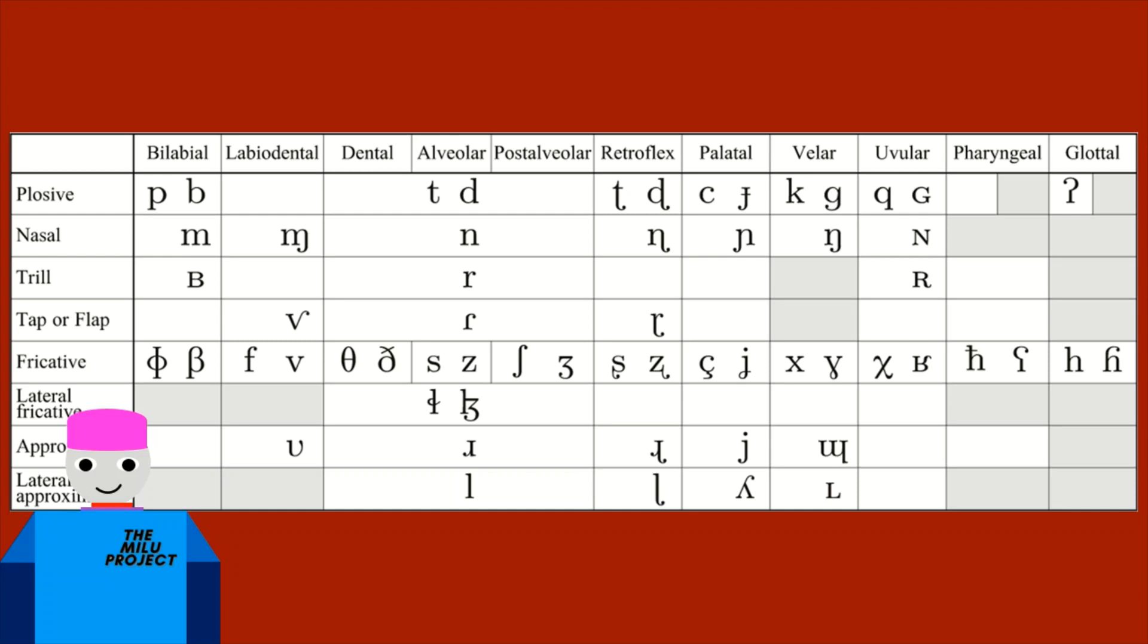This chart contains two main pieces of information, the places each sound or phoneme is articulated, and the manner in which this is done so in.